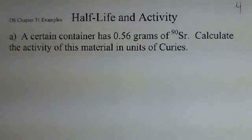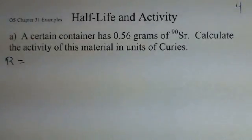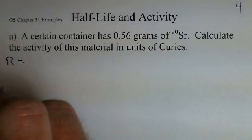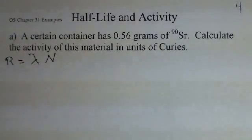But to calculate activity, the activity, we use R to stand for the activity symbol, radioactivity. We find this number by taking a number called lambda, the decay constant, multiplied by N, the number of radioactive nuclei that we have. In this context, lambda is not the wavelength.